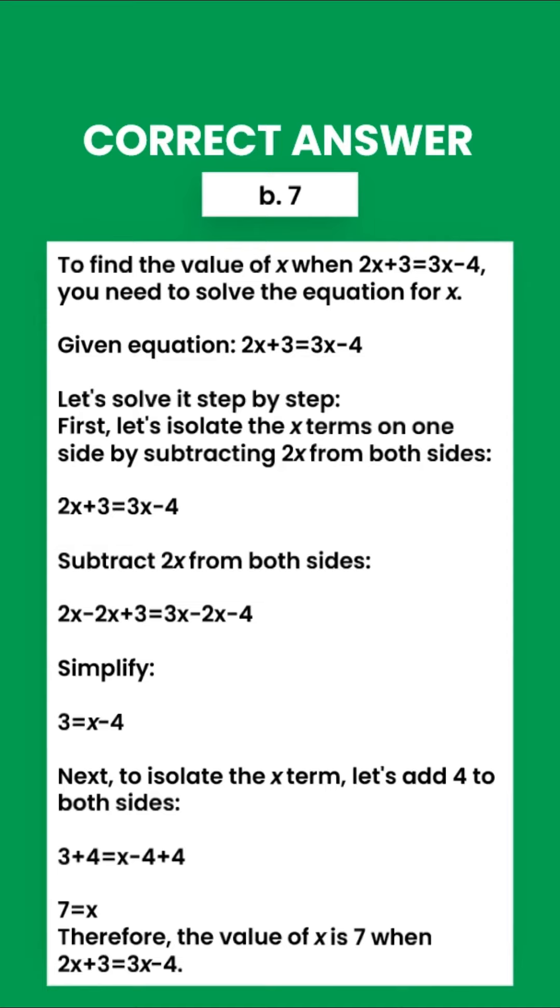Next, to isolate the x term, let's add 4 to both sides. 3 plus 4 equals x minus 4 plus 4.